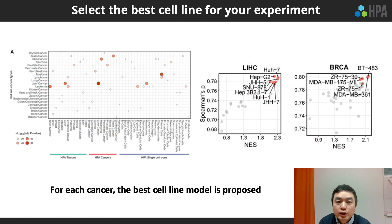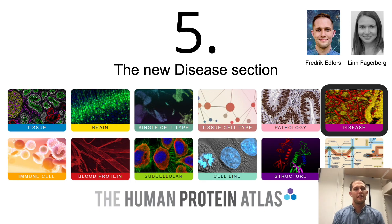In addition, each cancer cell line is compared to its original cancer to assess how similar their RNA expression profiles are and how much cancer-enriched genes are elevated in a specific cell line. Based on this analysis, the best cell line model is proposed for each cancer.